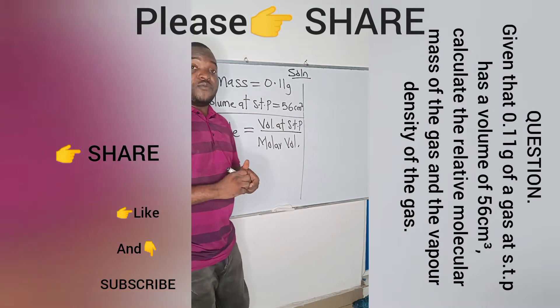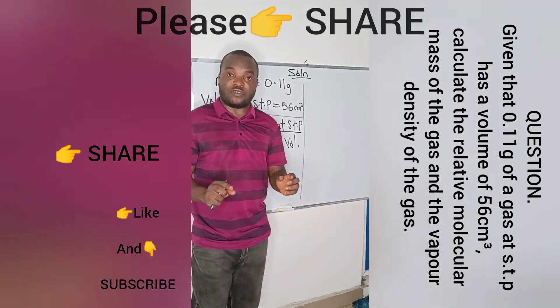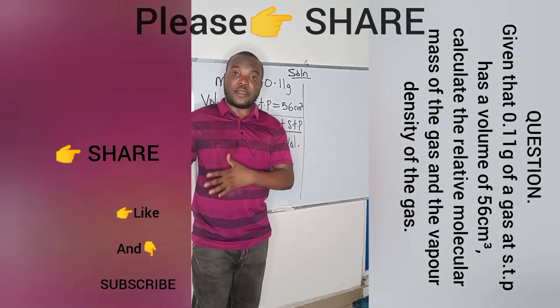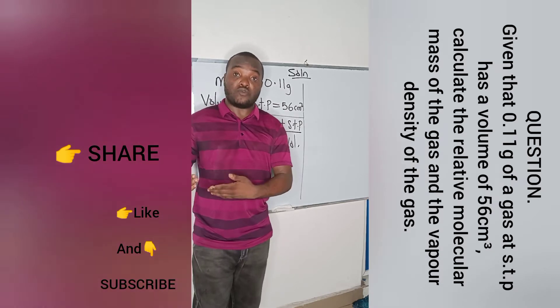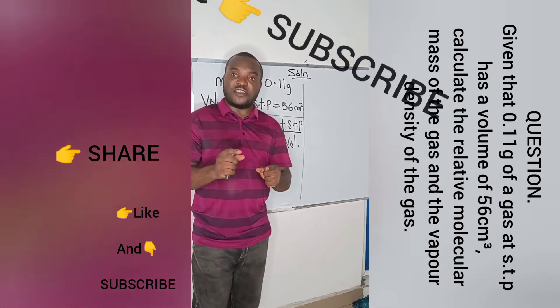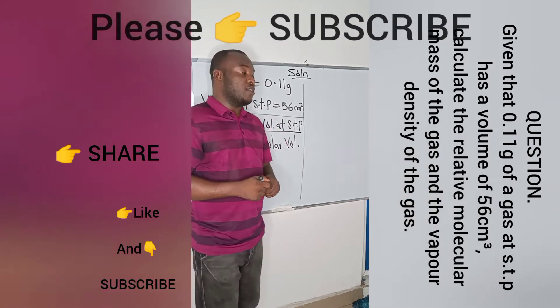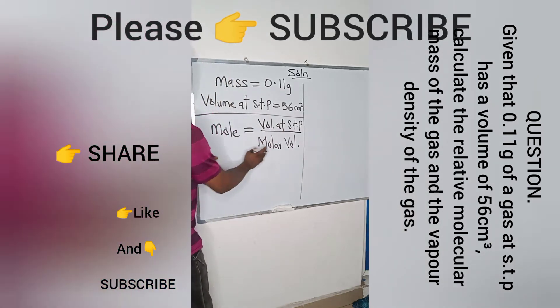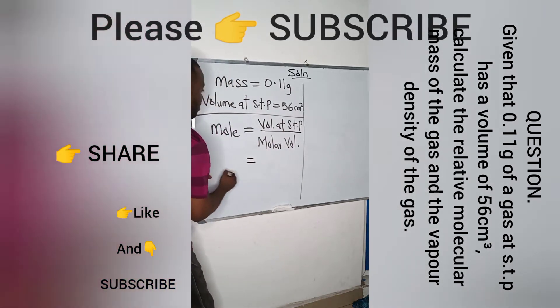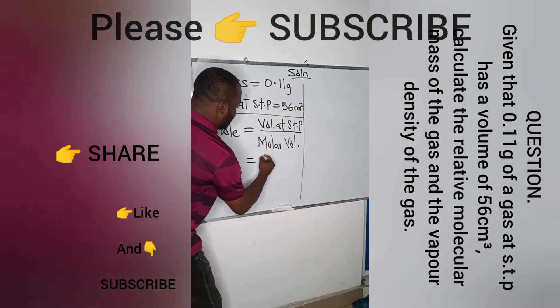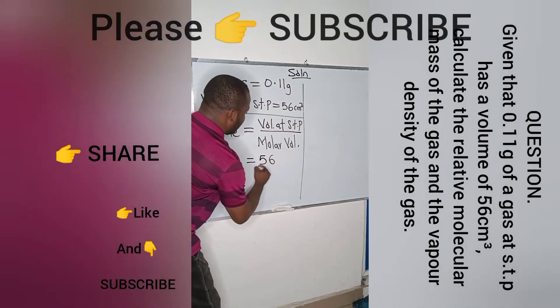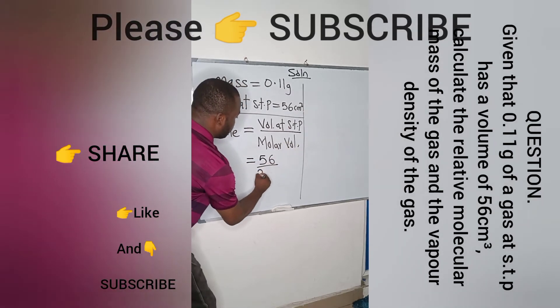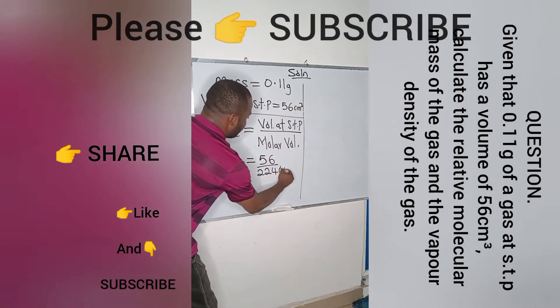Remember that the molar volume is a constant, which is 22.4 dm³ when you are working with dm³ or 22400 cm³. Now all we need to do is to do our substitution here. Mole becomes volume at STP, which is 56, divided by molar volume, which is 22400.